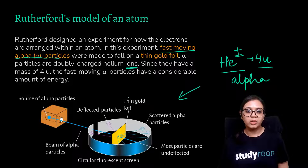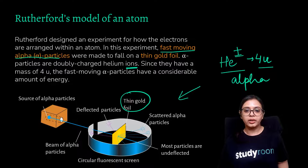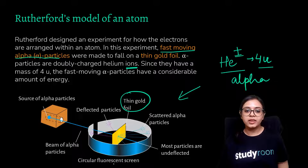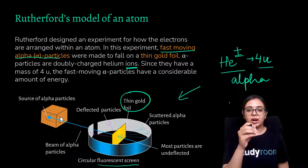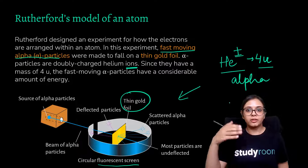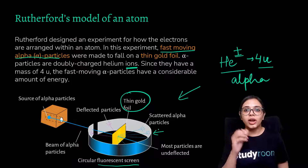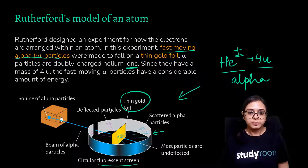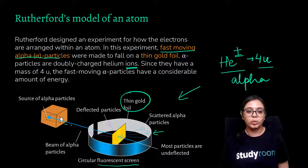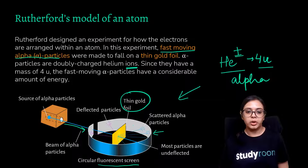The thin gold foil was surrounded by a circular fluorescent screen. As in Thomson's experiment, the fluorescent screen was used so that when particles scatter and fall onto it, bright shiny lights can be observed. A fine beam of alpha particles was directed to hit the thin gold foil. When it hits the gold foil, most of the alpha particles went straight through the gold foil — passing straight through.